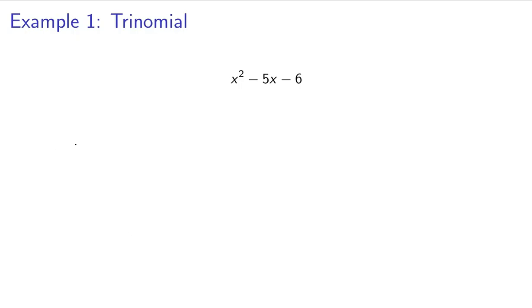So let's look at this first example. We have this trinomial, x squared minus 5x minus 6. We want to remember that whenever we multiply this out, we're going to get something that looks like this: x plus a, x plus b.